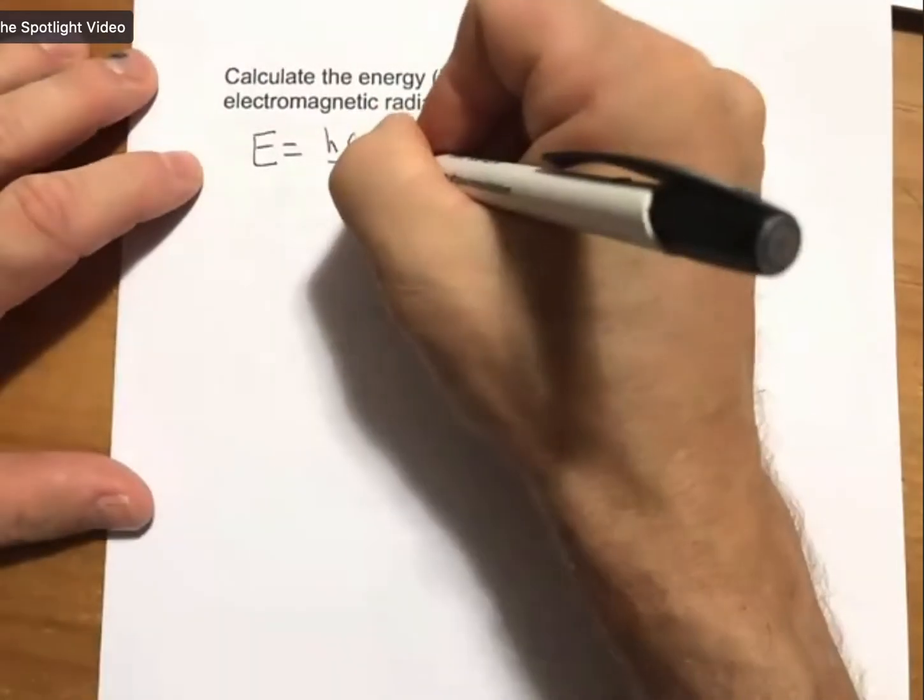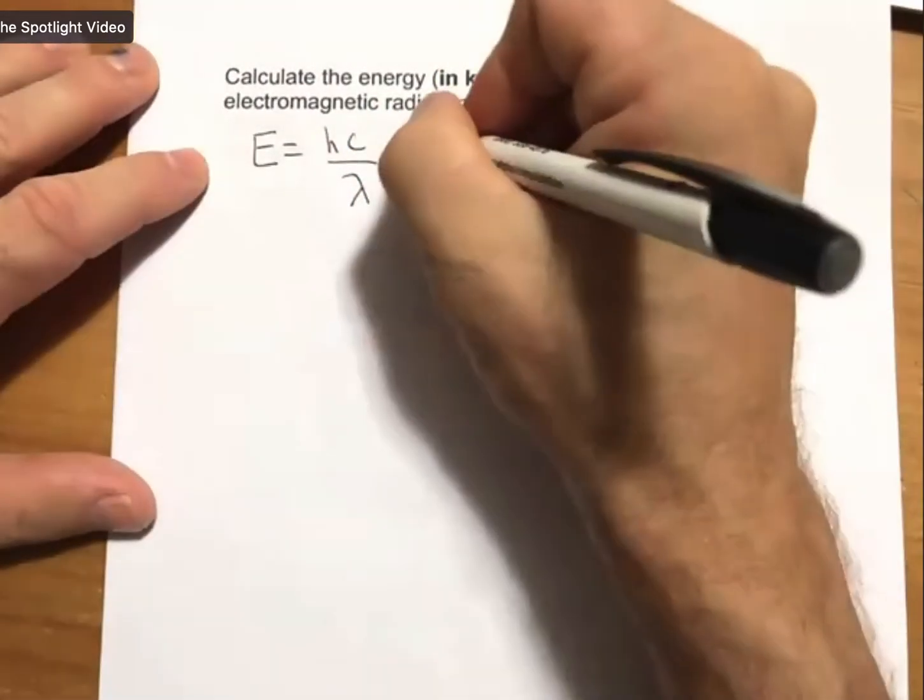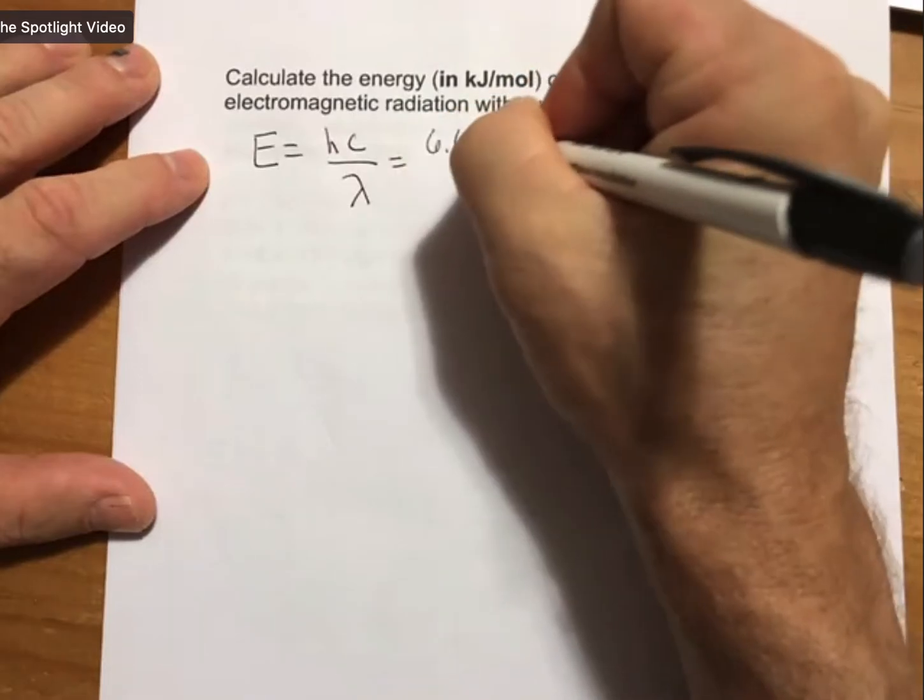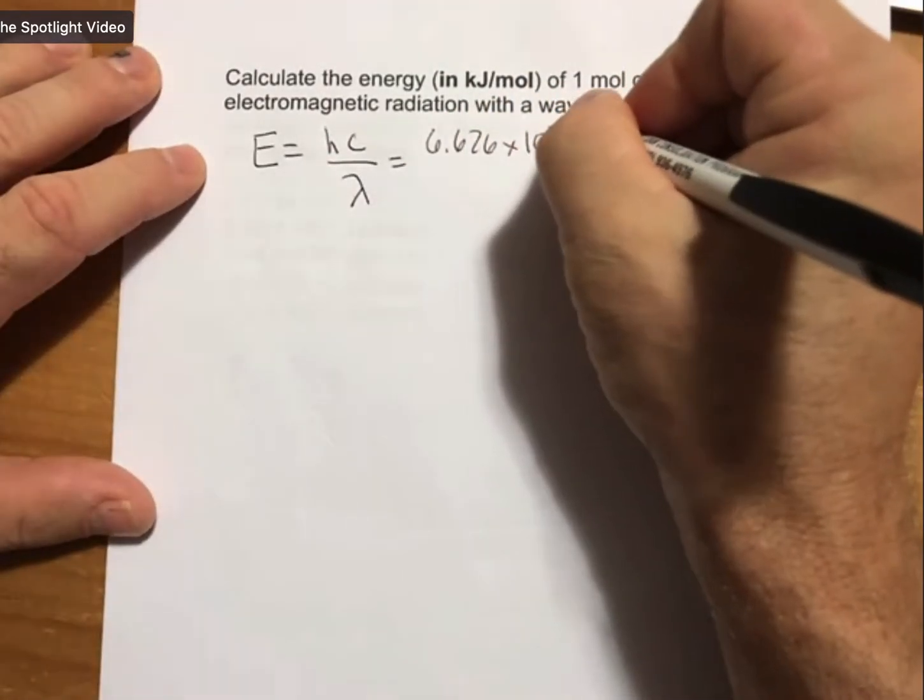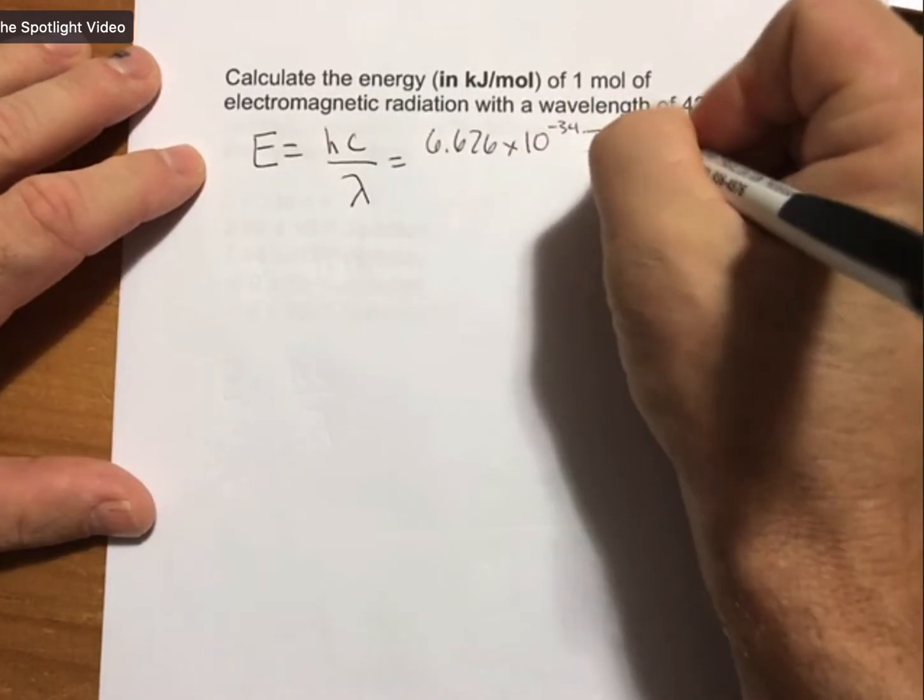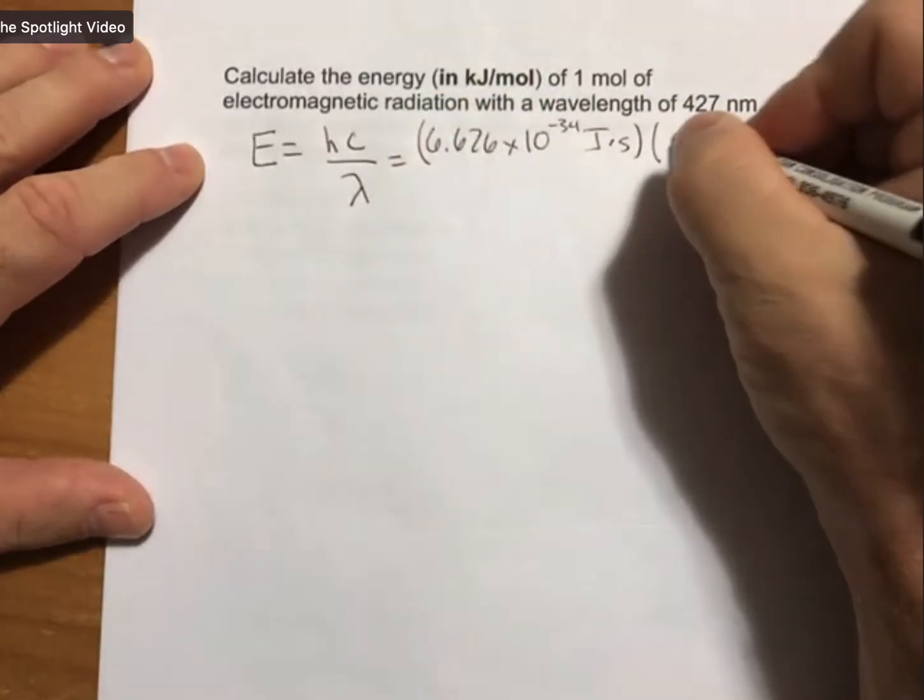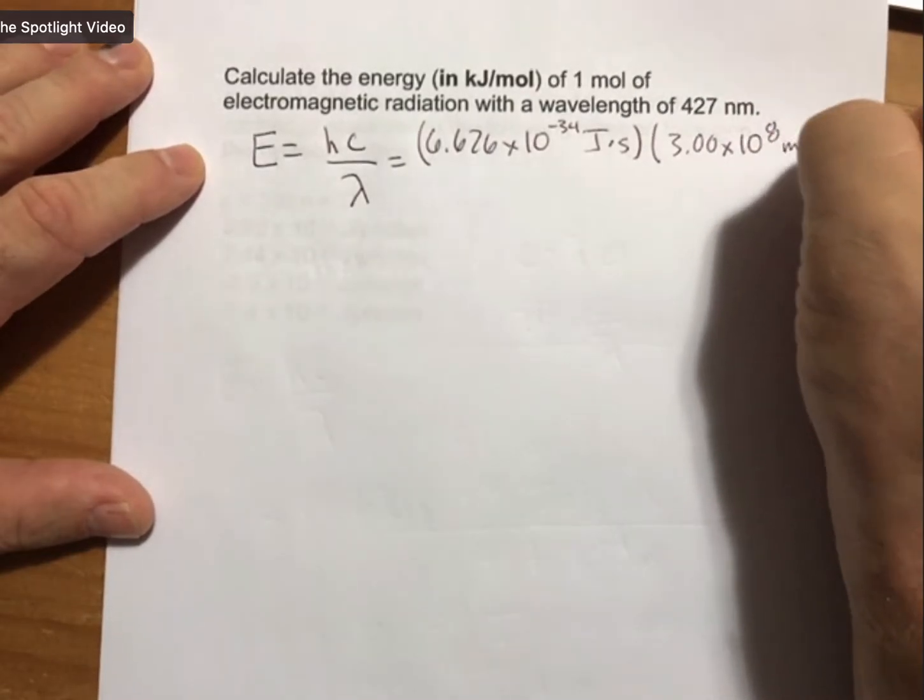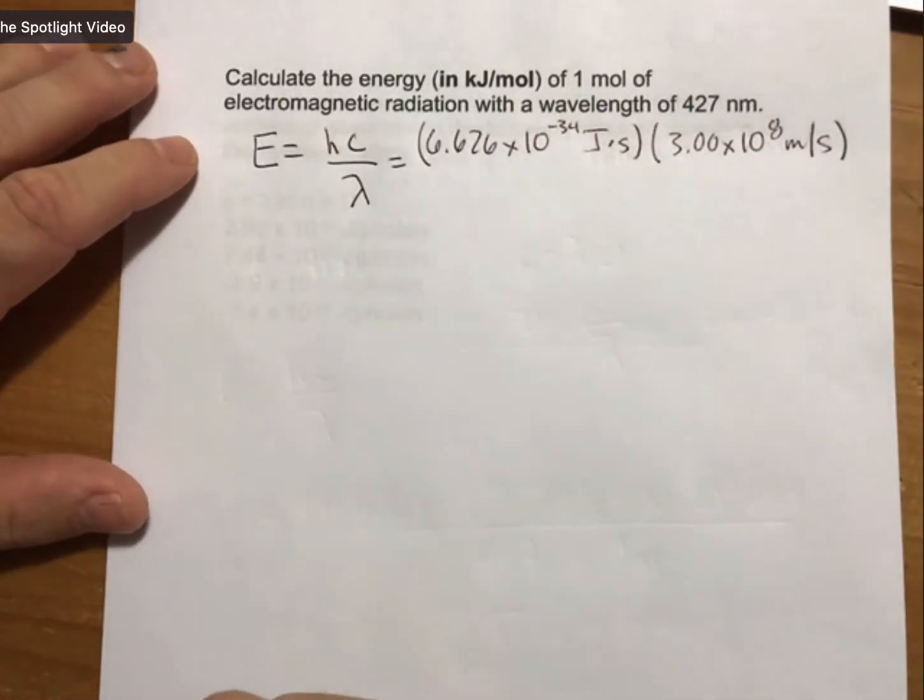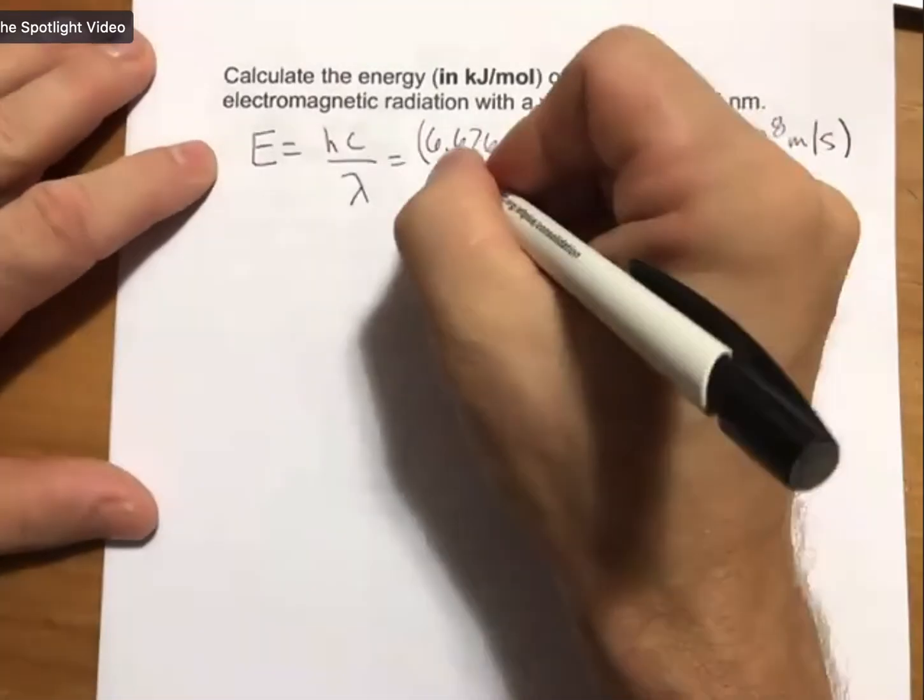And let's just go ahead and plug those in, 6.626 times 10 to the minus 34th joule seconds. Speed of light or speed of all electromagnetic radiation.